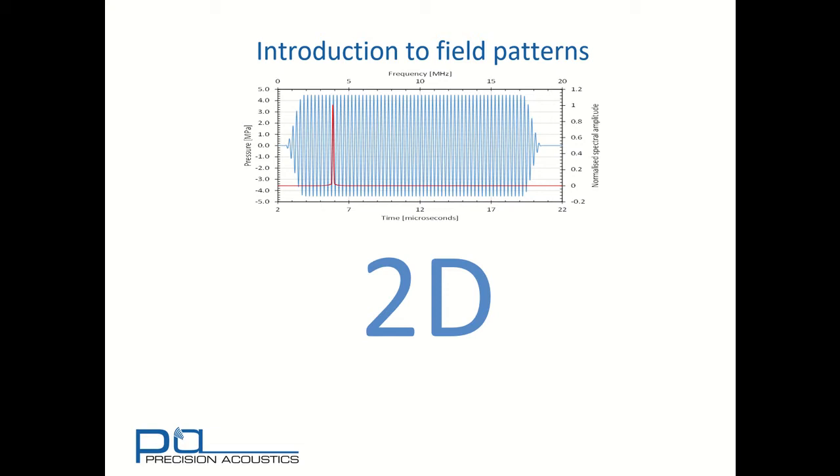Finally we could consider particle displacement or particle velocity in order to map our transducer's field. Other variables are available as well, but for the purposes of simplification this tutorial we'll consider pressure distributions only.